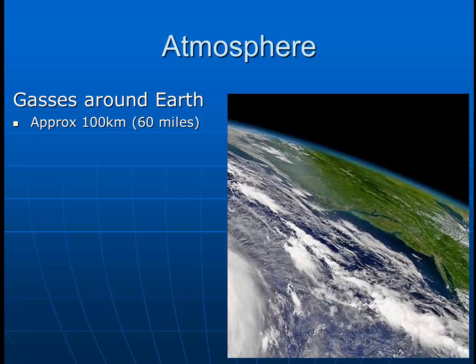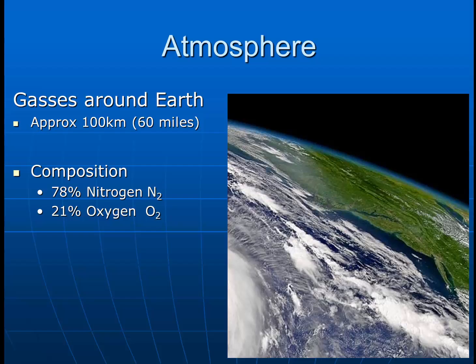Nearly 100 kilometers, or only 60 miles, of atmosphere is what protects the surface from the vacuum of space. In terms of composition, the Earth's atmosphere is mostly made out of nitrogen gas at 78%. We have a significant amount of oxygen, approximately 21%, and also a small amount of argon. It's also worth noting there are some other trace gases such as CO2 and water vapor that are also very significant to the makeup of Earth's atmosphere.